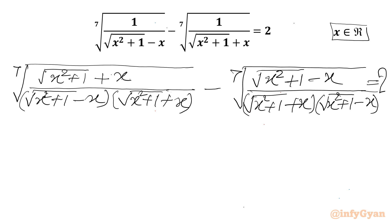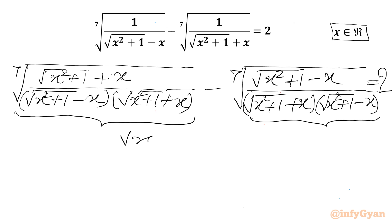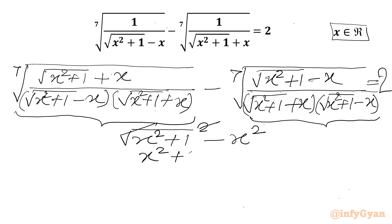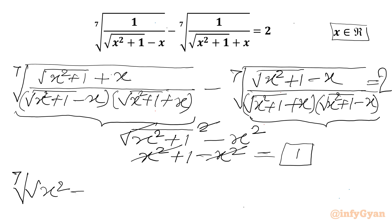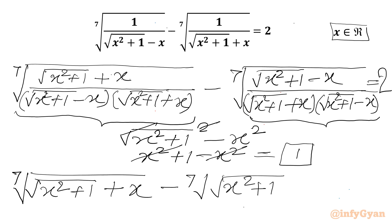And the right hand side is 2. Now you can see (a − b)(a + b) and (a + b)(a − b), so we can write our denominator using the difference of two squares identity: square root of (x² + 1) whole square minus x whole square. The square root and square cancel, so we can write x² + 1 − x². These two terms cancel, and we get our denominator equal to 1. So our equation becomes 7th root of (√(x² + 1) + x) minus 7th root of (√(x² + 1) − x) equal to 2.